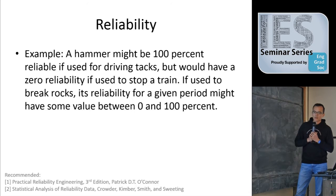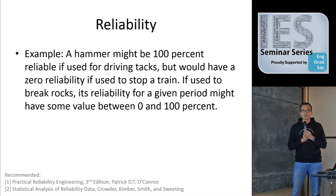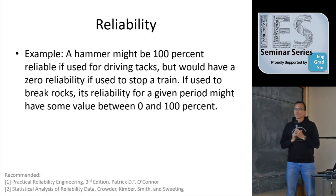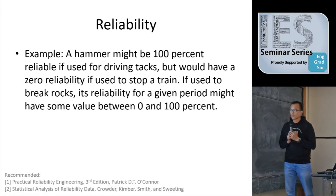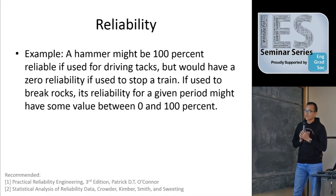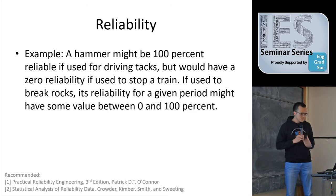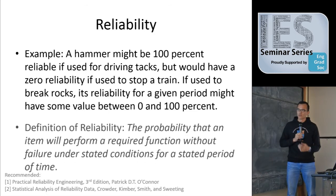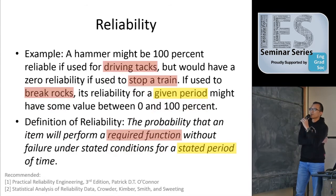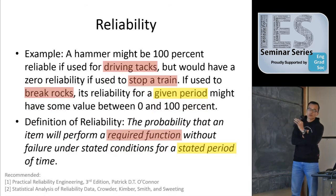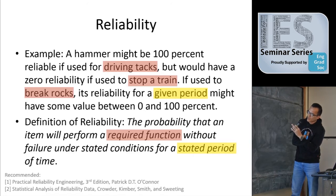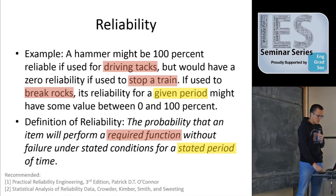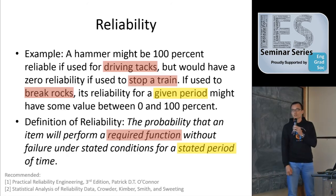So let me start with reliability. A hammer might be 100% reliable if used for driving tacks, but would have zero reliability if used to stop a train. If used to break rocks, its reliability for a given period might have some value between zero and 100%. So that's the definition of reliability — the probability that an item will perform a required function. If the required functions are different, you will have different reliability, and you also need a stated period of time to define it.